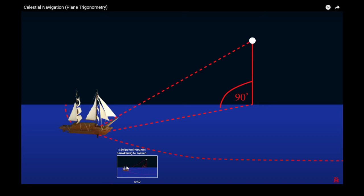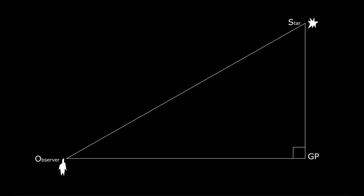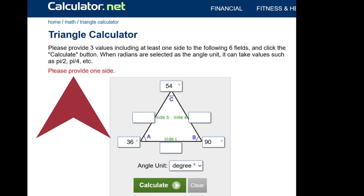If a sailor were sailing on a flat world, then he would have a right angle between observer, star, and GP of the star. He has measured the angle to the star — and then what? He doesn't know the distance to the star, he doesn't know the height of the star, and he doesn't know the distance to the GP — that is, the distance he is looking for. There is no formula to calculate the distance to the GP of the star if you don't know at least one side of the triangle.